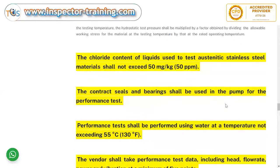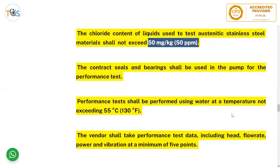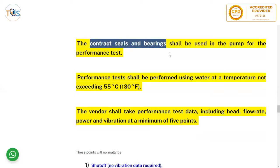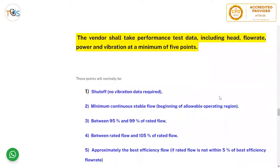The correct seals and bearings shall be used in the pump for the performance test. The performance test shall be performed using water at a temperature not exceeding 55°C (130°F). The vendor shall take performance test data including head, flow rate, power, and vibration at a minimum of five points.